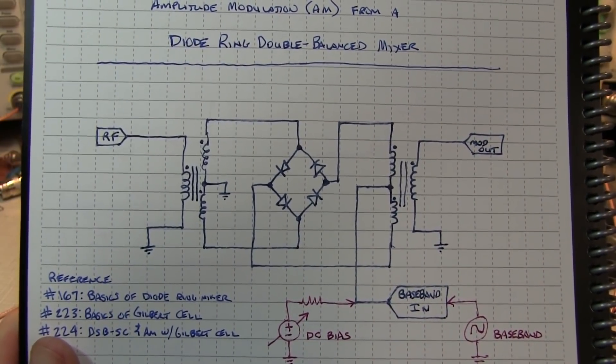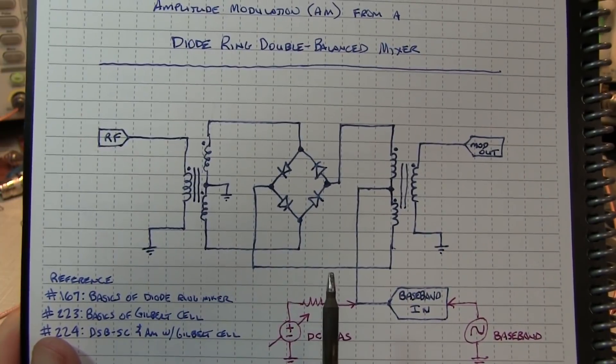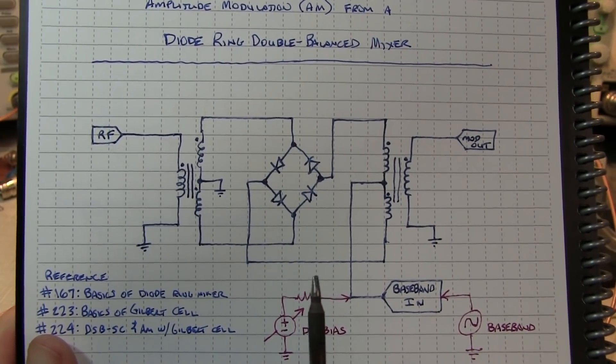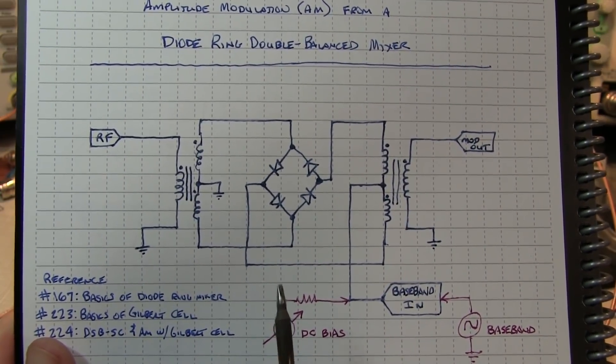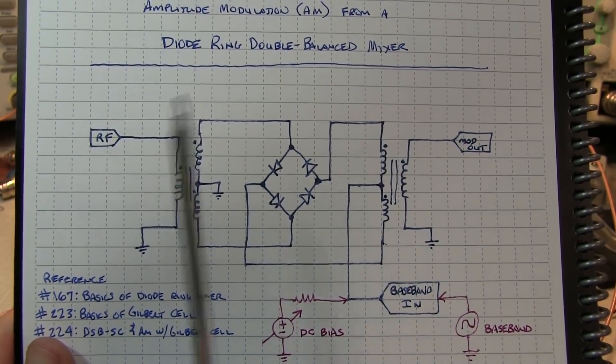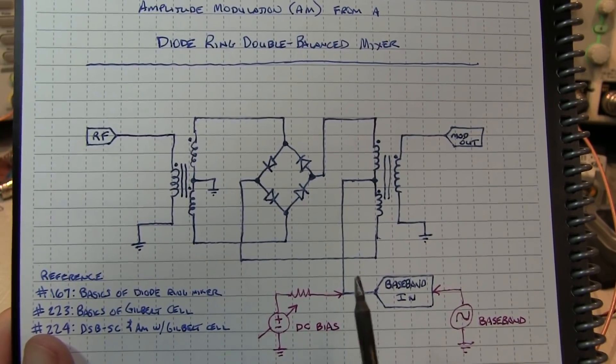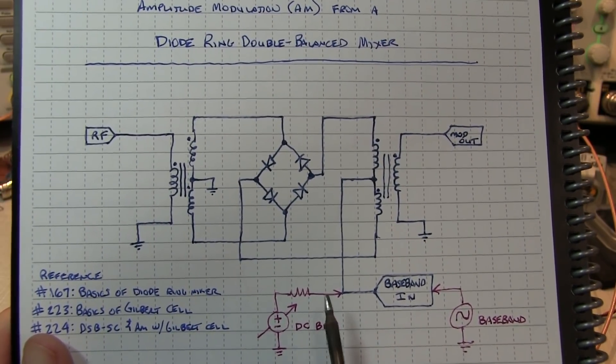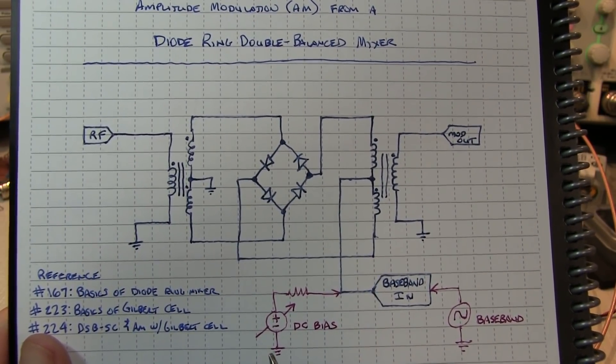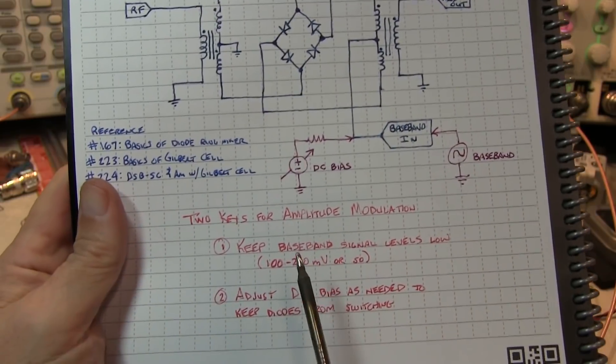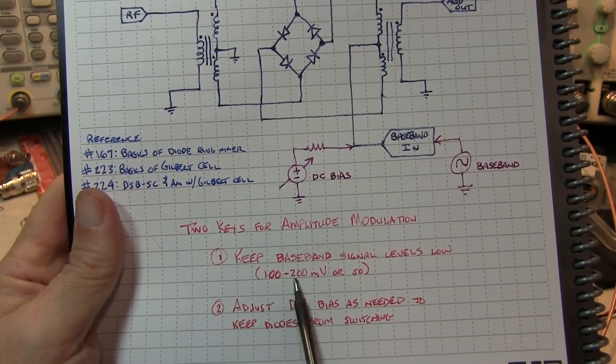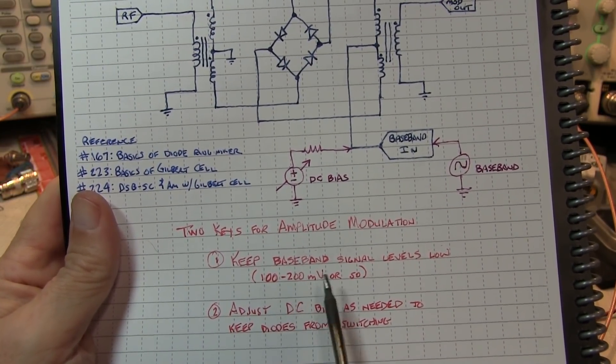Now normally when using a mixer like this, the ports can sometimes be driven kind of hard for the conversion to ensure that you get good rejection of the LO, for example. In this particular case where we're using it for a modulator, we're actually going to be driving the IF port very lightly. And really the key is to keep that baseband signal level down to 100 to 200 millivolts peak to peak maximum.